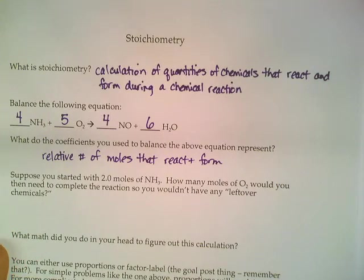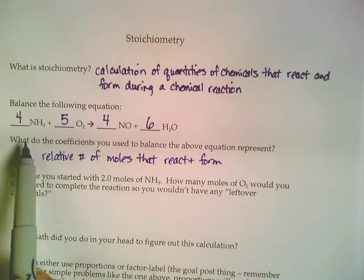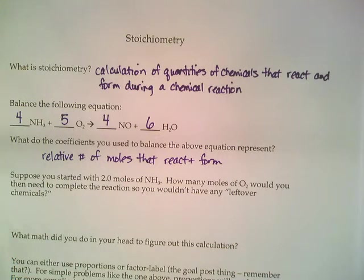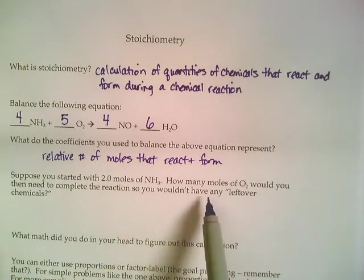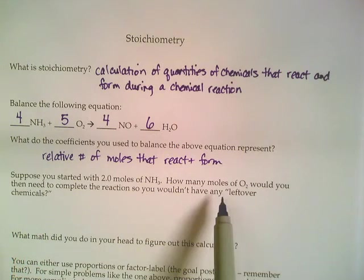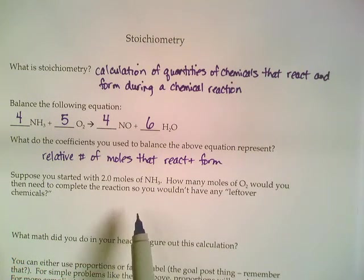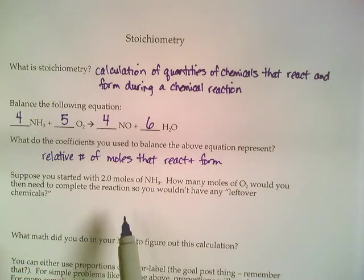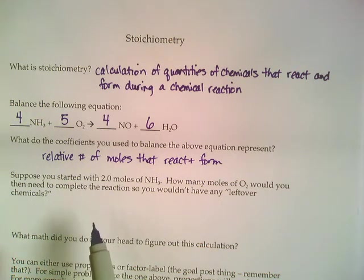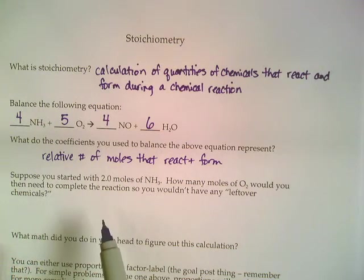So let's just say you started with 2 moles of NH3, not the 4, like it says in the equation here, and it wanted you to figure out how many moles of oxygen you would need to complete the reaction, so you wouldn't have any leftovers. Well, stoichiometry is often an analogy that's often used, is that it's just like a recipe. It's kind of like if you were baking a cake, and they told you you would need 2 cups of flour, and 1 cup of butter, and 2 eggs.